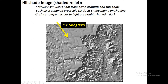And believe it or not, that's actually all this picture is. This is literally a new raster — a hillshade raster — with pixel values 0 to 255, each pixel assigned a grayscale value. And just by doing that, you can see this amazing detail of the landscape.